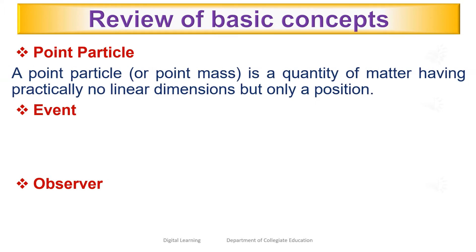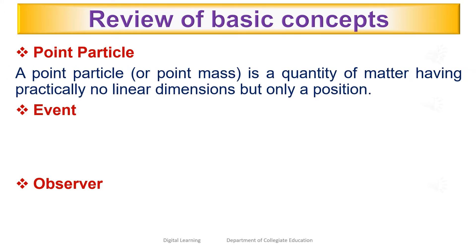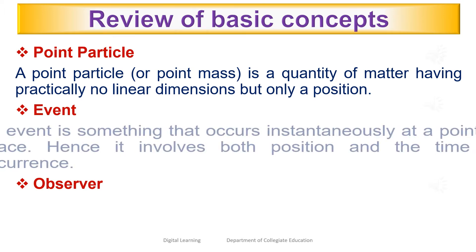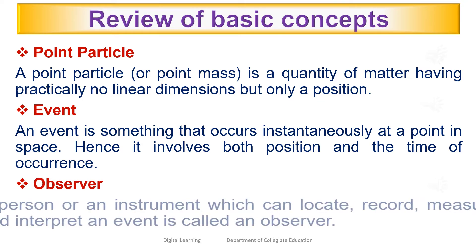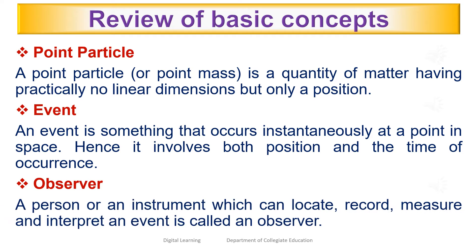A point particle or point mass is a quantity of matter having practically no linear dimension but only a position. An event is something that occurs instantaneously at a point in space; hence, it has both a position and a time of occurrence. A person or instrument which can locate, record, measure, and interpret an event is called an observer.